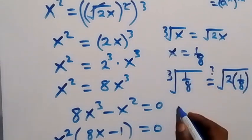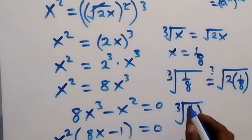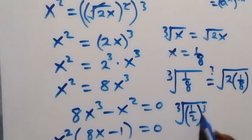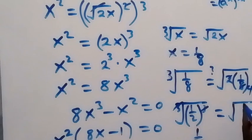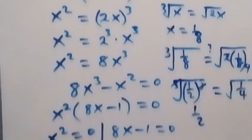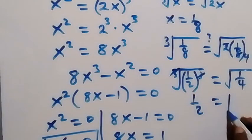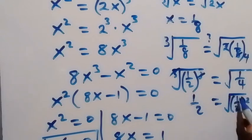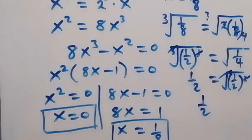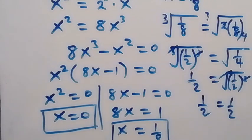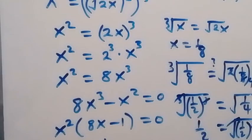We can write 1 over 8 as 1 over 2 raised to power 3, since 1 cubed is 1 and 2 cubed is 8. The cube root then cancels this cube power, leaving one half on the left. On the right side, 2 over 8 simplifies to 1 over 4, and 1 over 4 can be written as the square root of 1 over 2 squared, so the square root cancels, also leaving one half. Since both sides equal one half, x equals 1 over 8 satisfies the equation.